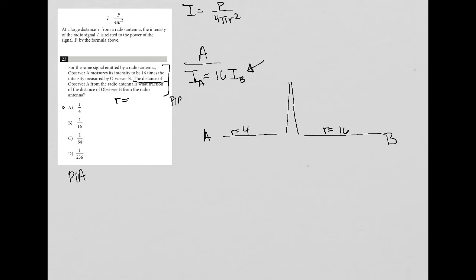Well, let's see. So for IA, I'd have P over 4π times 16. So I'd have IA equals P over 64π.